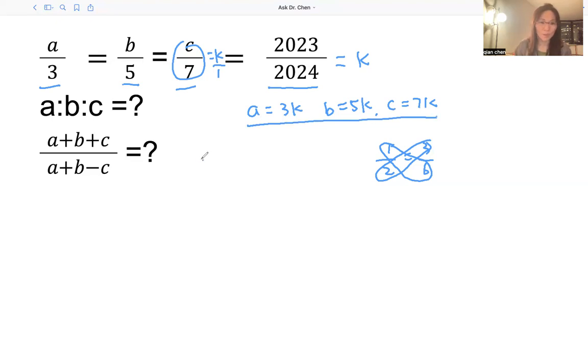Now we can find A to B to C. The ratio equals 3k to 5k to 7k. The colon means division. We see the k's just disappear, so we have 3 to 5 to 7, and that's it. We can ignore this 2023 divided by 2024, which we set as a variable, because in the end, since it's a ratio, it will cancel out.